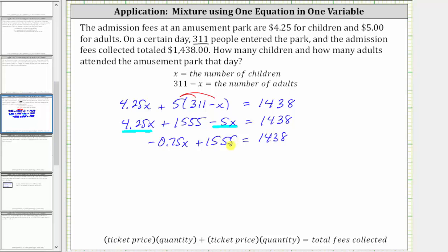The next step is to isolate the variable term, which means we need to undo plus 1,555 by subtracting 1,555 on both sides of the equation. Simplifying on the left, we have negative 0.75x is equal to, on the right, 1,438 minus 1,555, which is equal to negative 117.